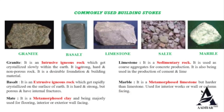Commonly used building stones: slate is a metamorphosed clay, majorly used for flooring and interior or exterior wall facing. Marble is a metamorphosed limestone but harder, used for interior works and wall or column facing. Granite is an intrusive igneous rock, crystallized slowly within the earth — strong, hard, and non-porous, making it a desirable foundation and building material. Basalt is an extrusive igneous rock, rapidly crystallized on the earth's surface — hard and strong but porous with internal fractures. Limestone is a sedimentary rock used as coarse aggregate for concrete and in the production of cement and lime.